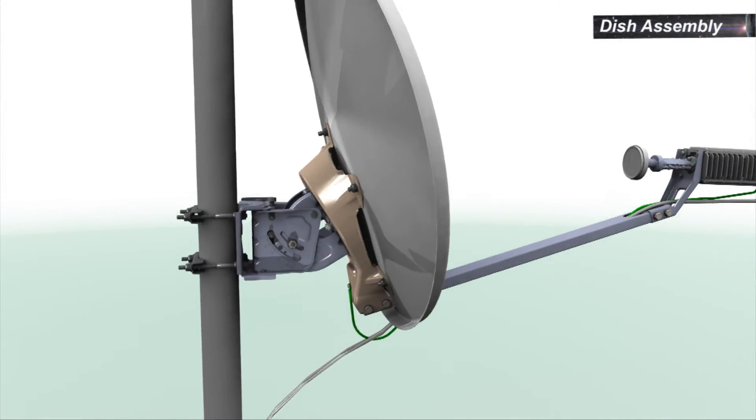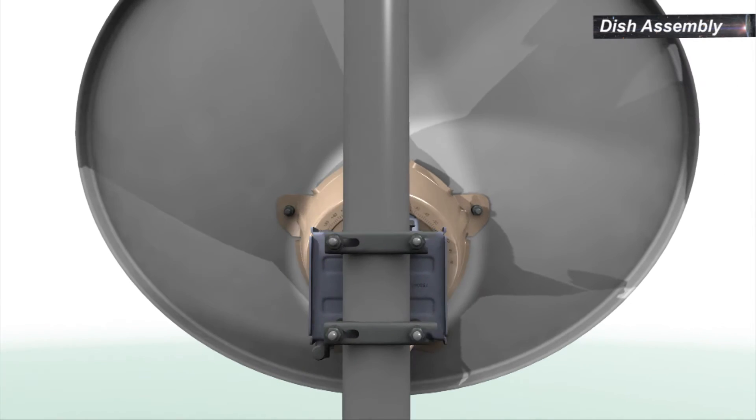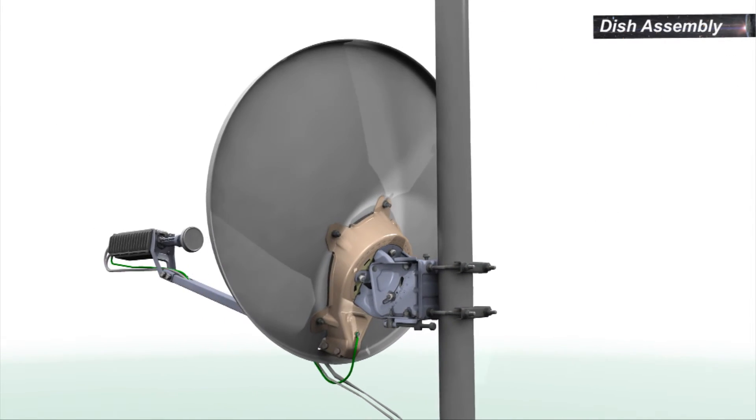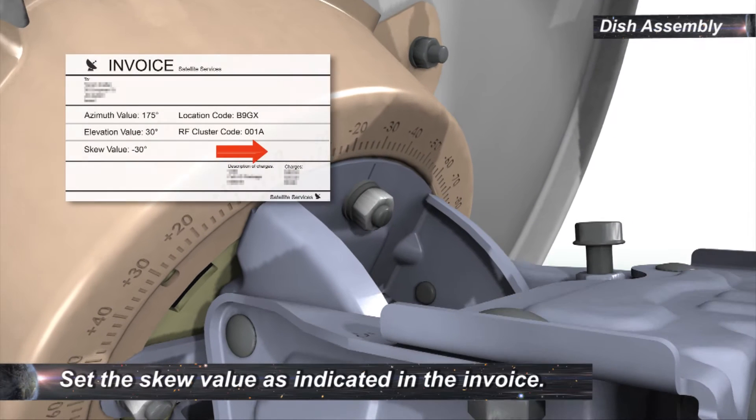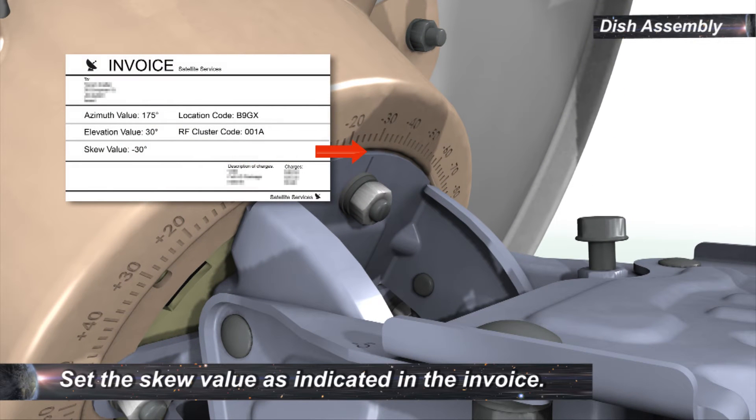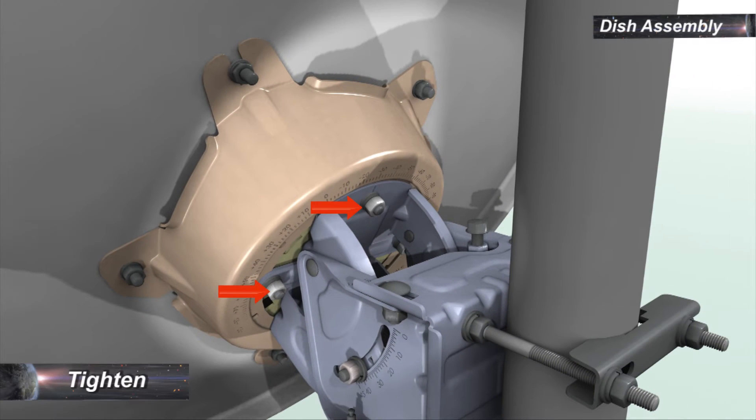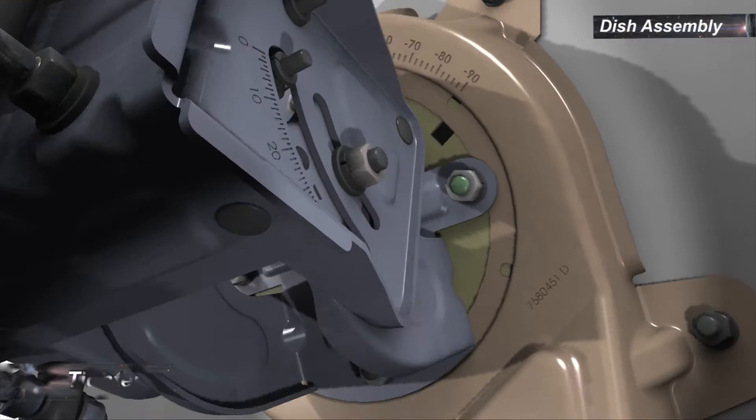To set the skew value, rotate the back bracket reflector assembly around the ASL skew plate assembly to set the skew value as indicated in the invoice. Tighten the four nuts holding the ASL skew plate assembly together.